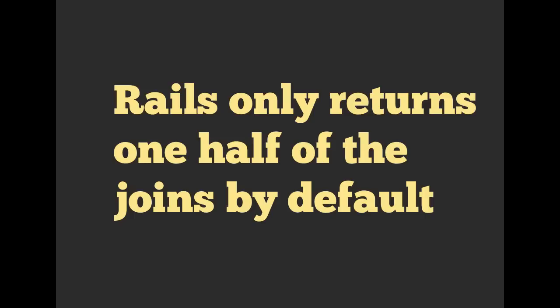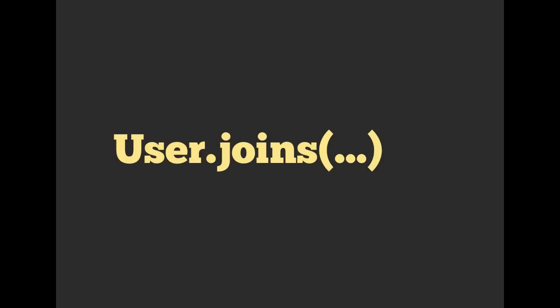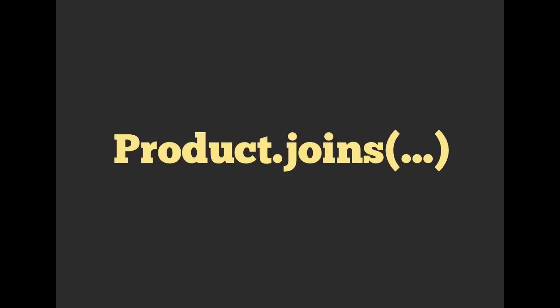We basically told Rails that we're only interested in the first part. So when we say user.joins(:something), we're going to only pull back users from that join. If we say product.joins, we're only going to be pulling back products. I like to think of it in terms of whatever I start with — if I start with my Product class, then I'm going to get either an array of products or an individual product. So if you want a product, start with product, and then you can join whatever else you want onto it and use where clauses to get the specific data that you're looking for.